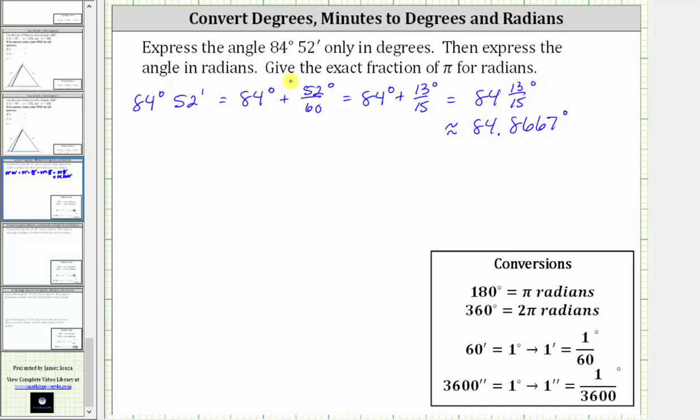Now we're told to express the angle in radians and give the exact fraction of pi for radians. To do this, we'll begin with the angle in degrees expressed as a mixed number shown here. So beginning with 84 and 13/15ths degrees,